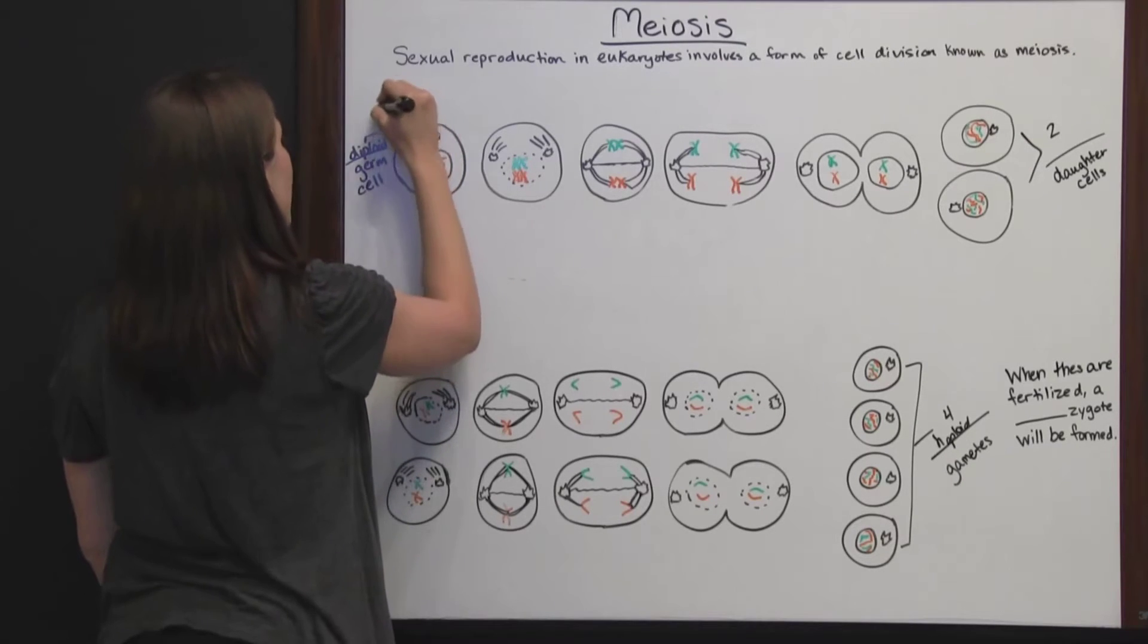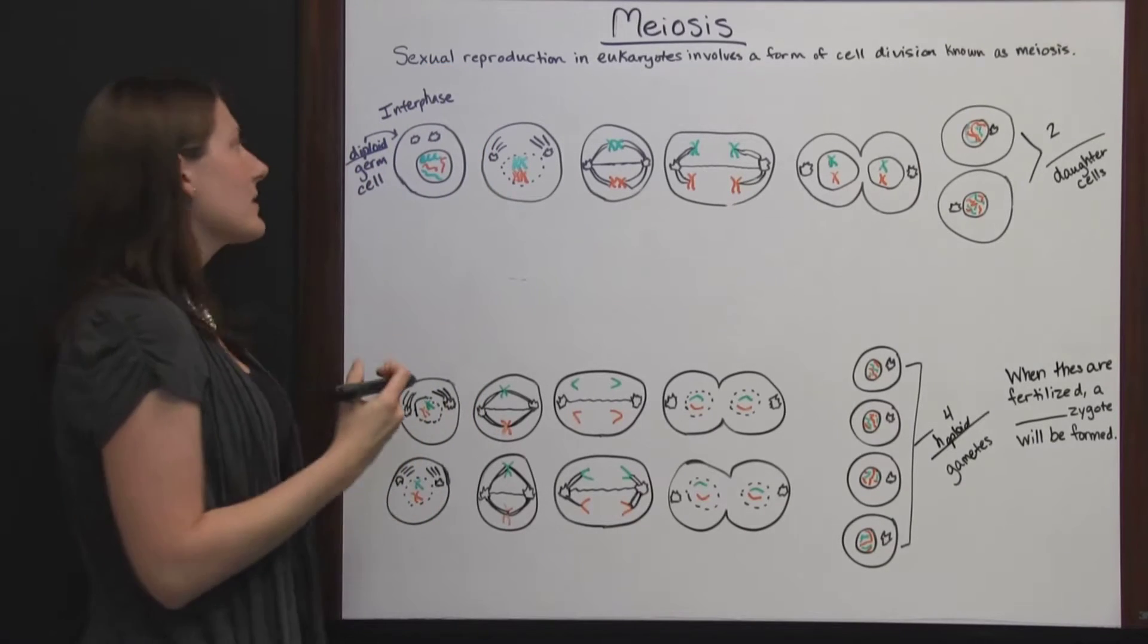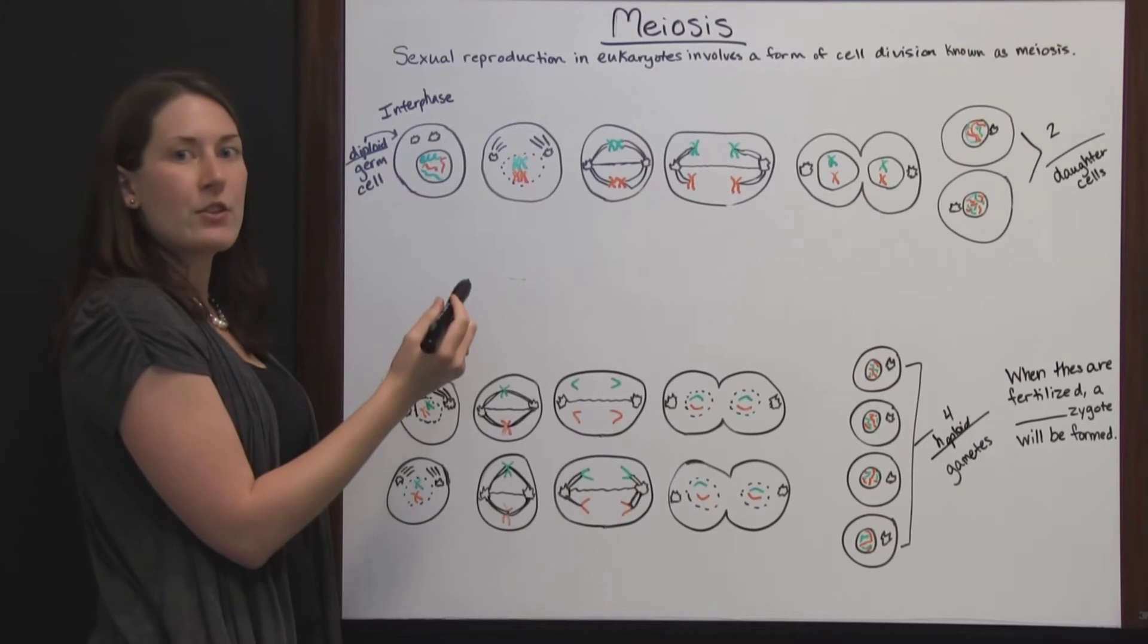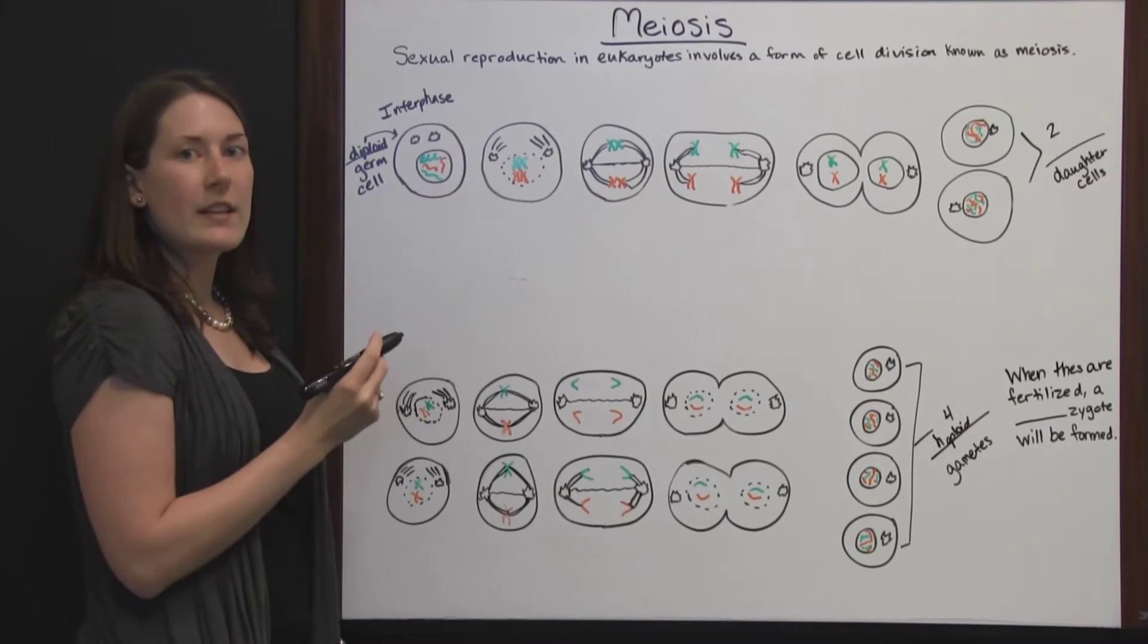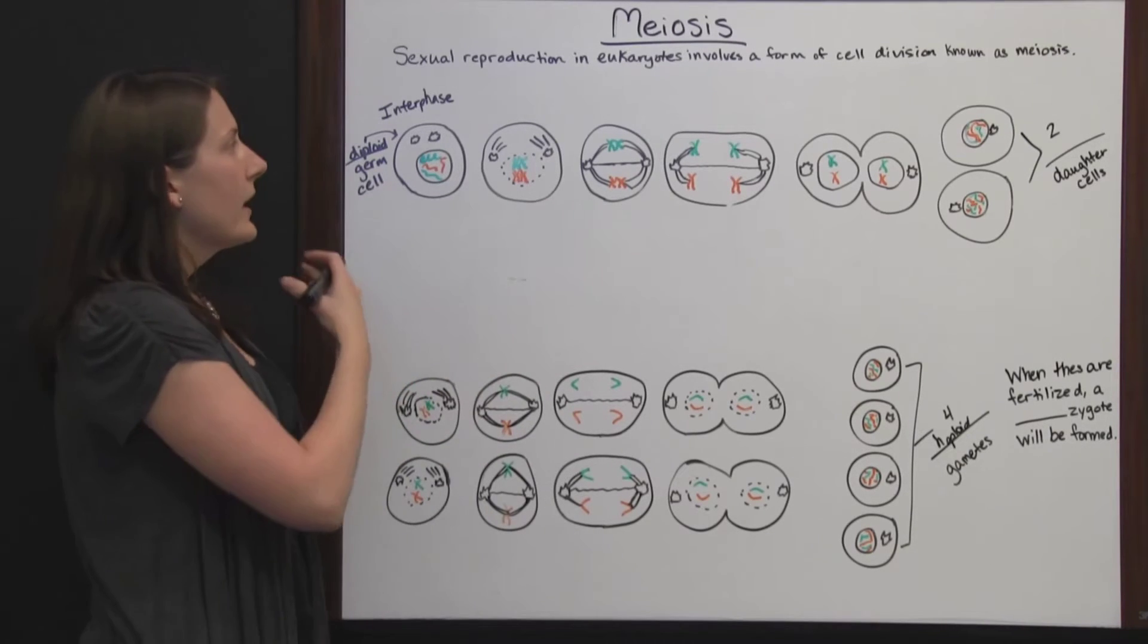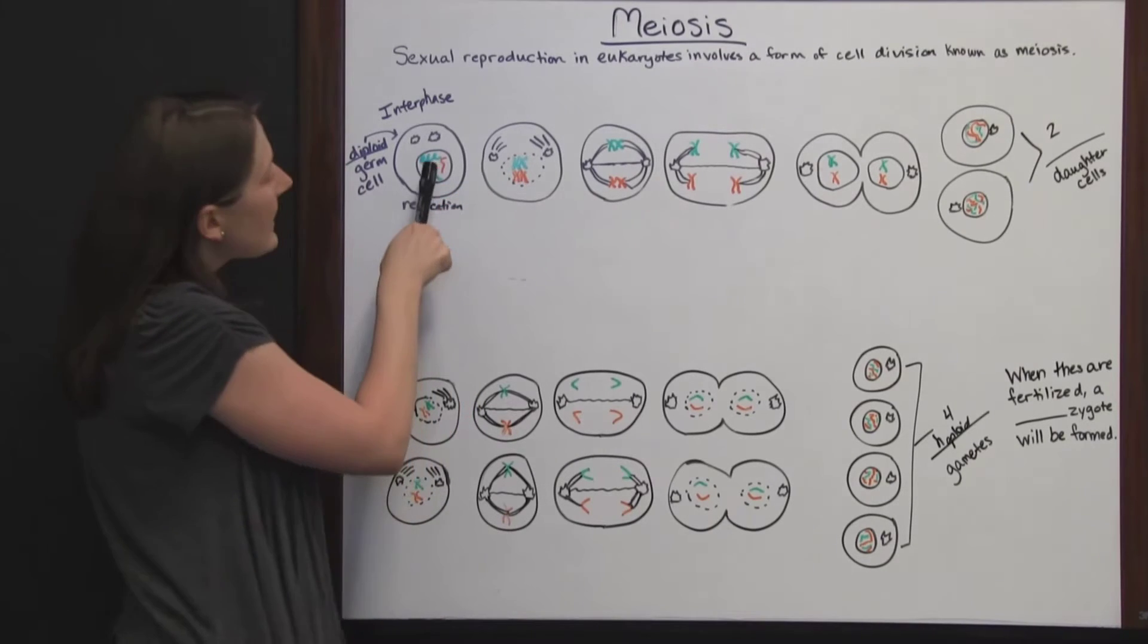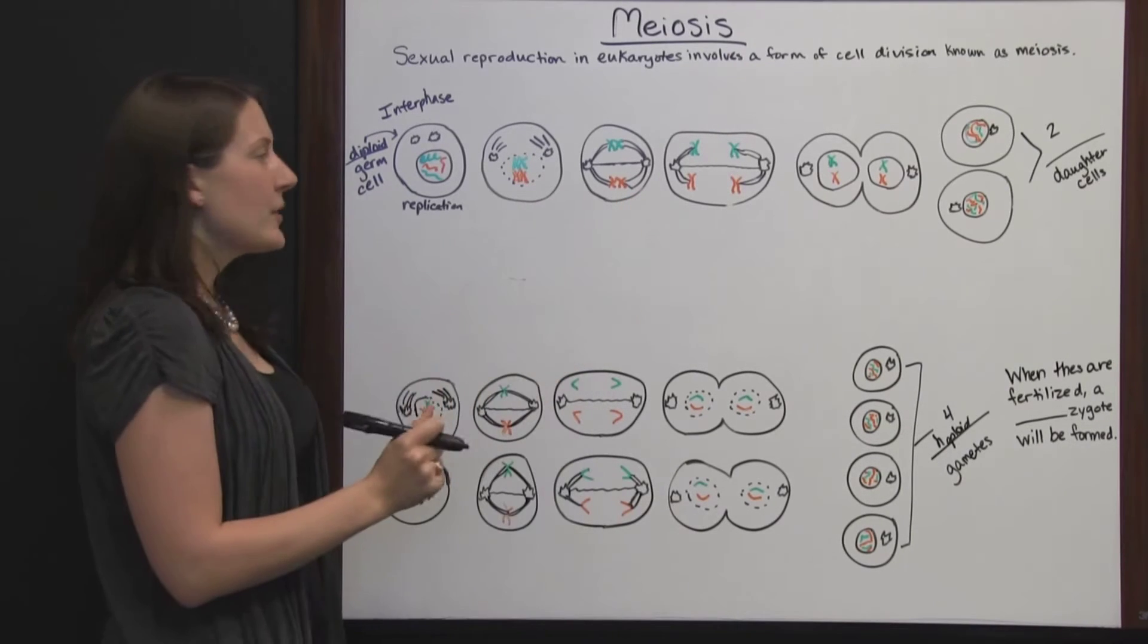In this first part, interphase, which occurs before meiosis starts, the diploid germ cell contains genetic information from both maternal and paternal parents. You've got female and male genetic material in this one diploid germ cell getting ready to divide to carry out sexual reproduction. Replication is occurring because each chromosome doubles itself so there's extra genetic material to carry out this process.